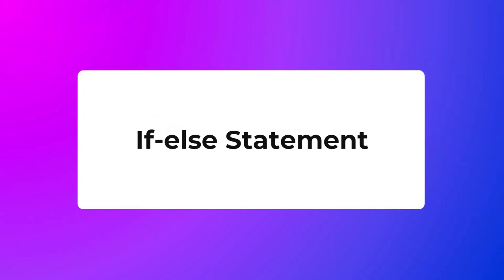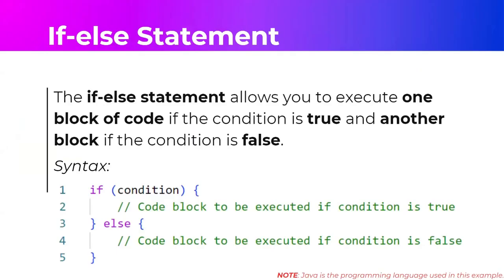Now let's look at the if-else statement. Earlier we handled a condition that is true. The if-else allows us to execute one block of code if the condition is true and another block of code if the condition is false. The syntax is: if (condition), then our statements if the condition is true, and then else, followed by our statements if the condition is false.